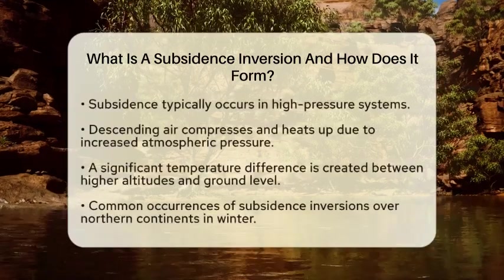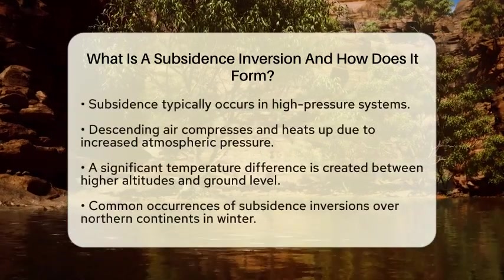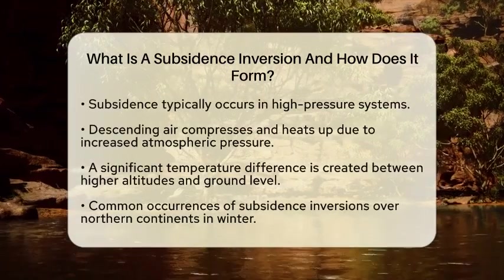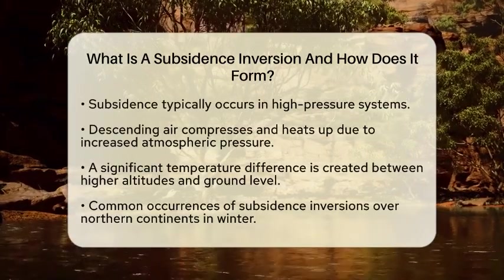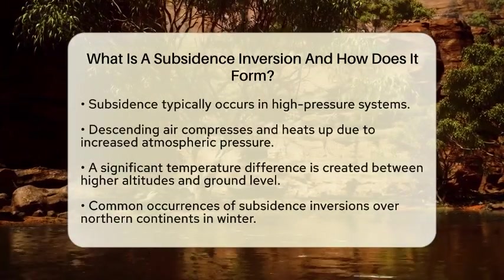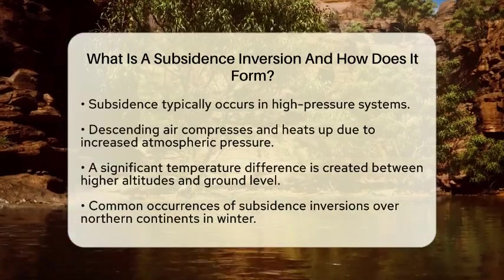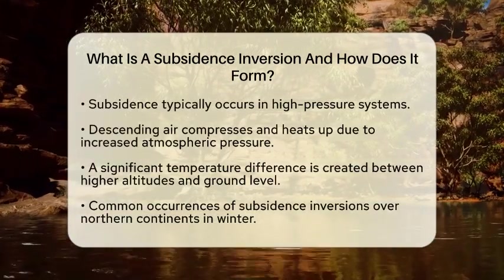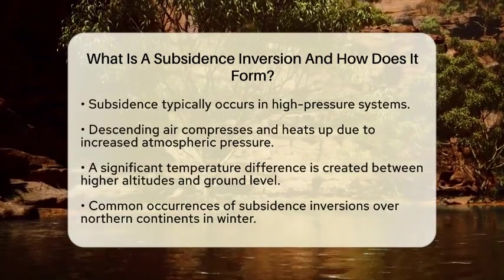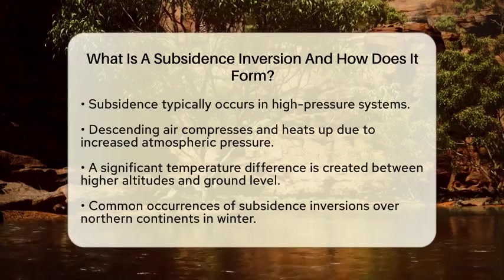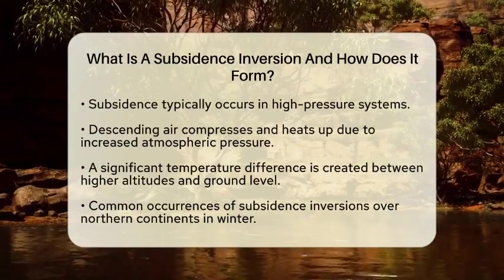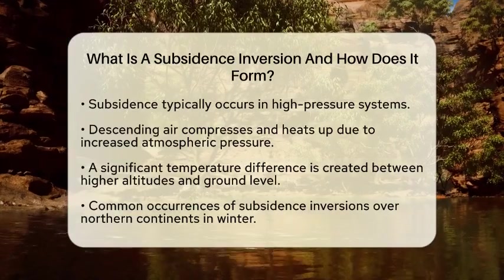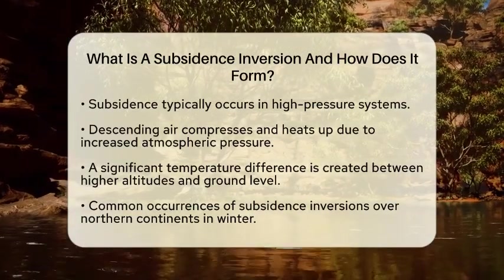This situation can significantly influence weather patterns and climate. Now let's talk about how this inversion forms. It starts with a process called subsidence, which is when air descends or sinks in the atmosphere. This typically happens in high-pressure systems. When air sinks, it compresses due to the increasing atmospheric pressure. As this air compresses, it heats up.